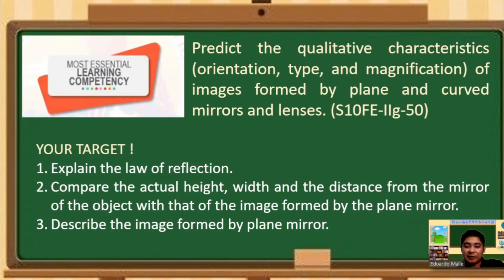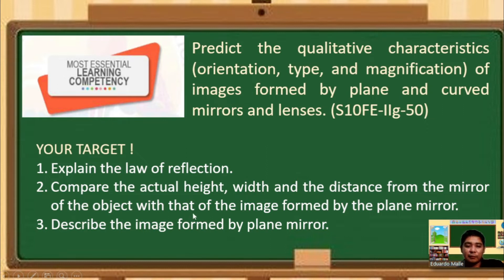Our most essential learning competency is to predict the qualitative characteristics, orientation, type, and magnification of images formed by plane and curved mirrors and lenses. For this module, our targets are: number one, explain the law of reflection; number two, compare the actual height and distance from the mirror of the object with that of the image formed by the plane mirror; number three, describe the image formed by a plane mirror.